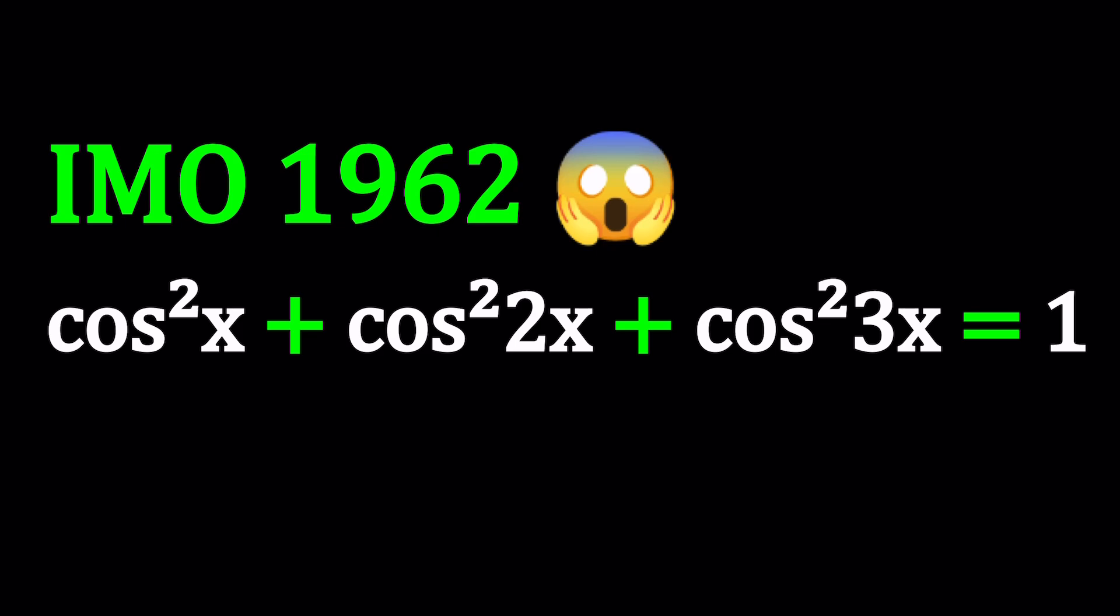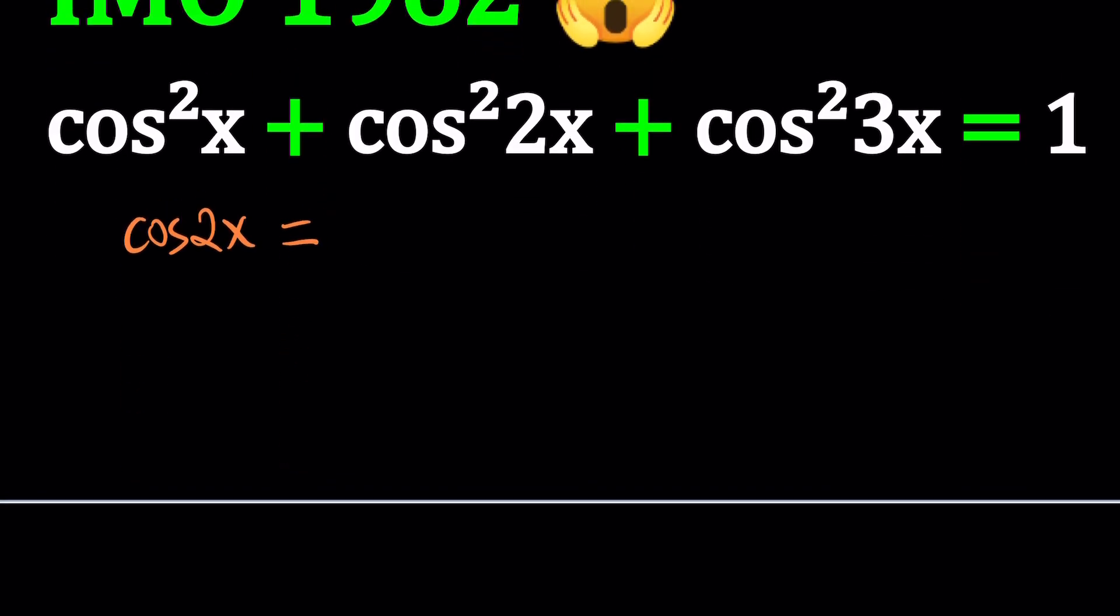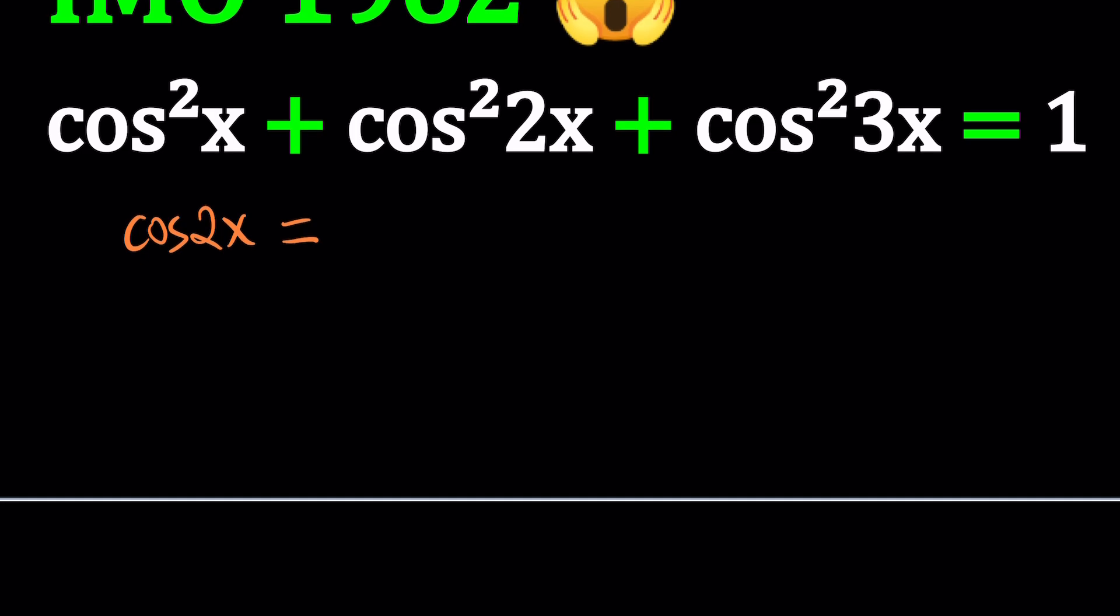We're going to go ahead and start by using some identities. For example, what is cosine of 2x? Cosine of 2x can be written in three different ways, but we want to use the one with the cosine. Cosine 2x can be written as 2 cosine squared x minus 1. Of course we're going to square it, but that's what it is.